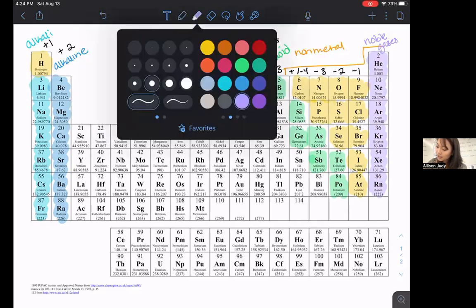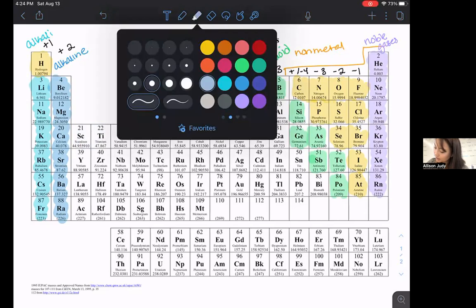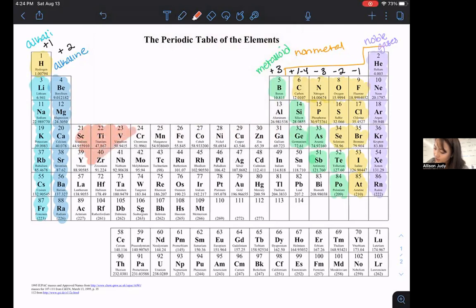Then we have, let me get a color that I like that's slightly different. Then we have these transition metals, and I actually want them to stand out a little bit more. So we'll do an icky orange. These transition metals are right here in the middle. And this is kind of an old periodic table, so we've definitely filled out a lot of this.